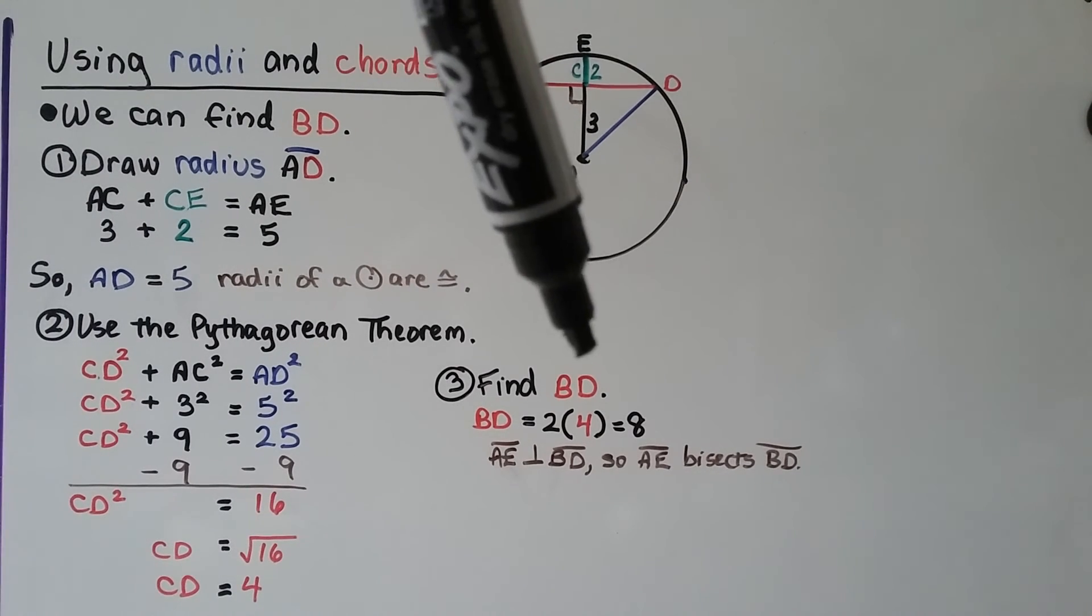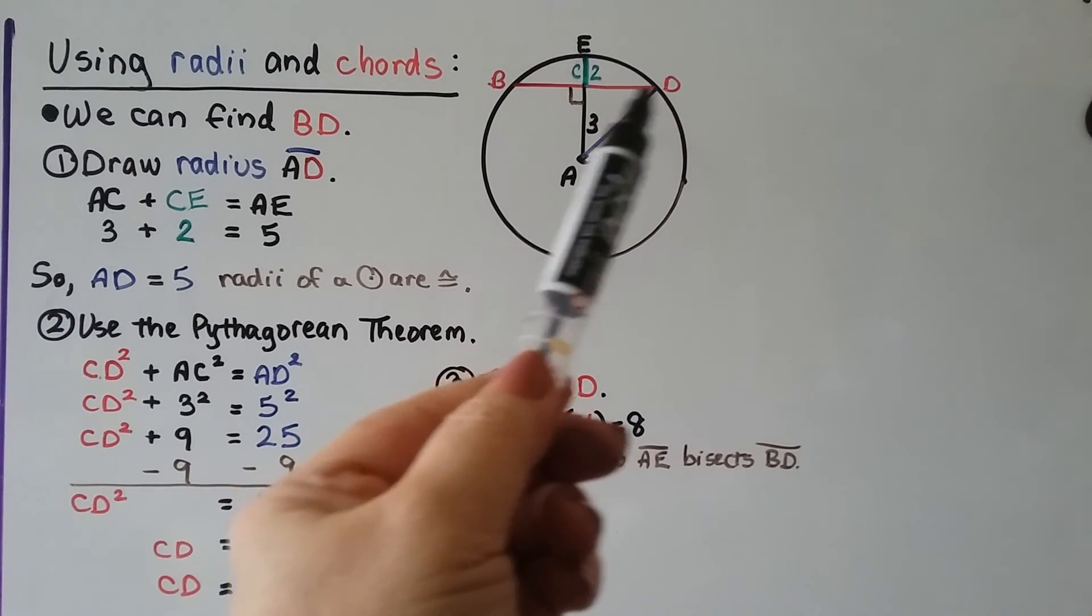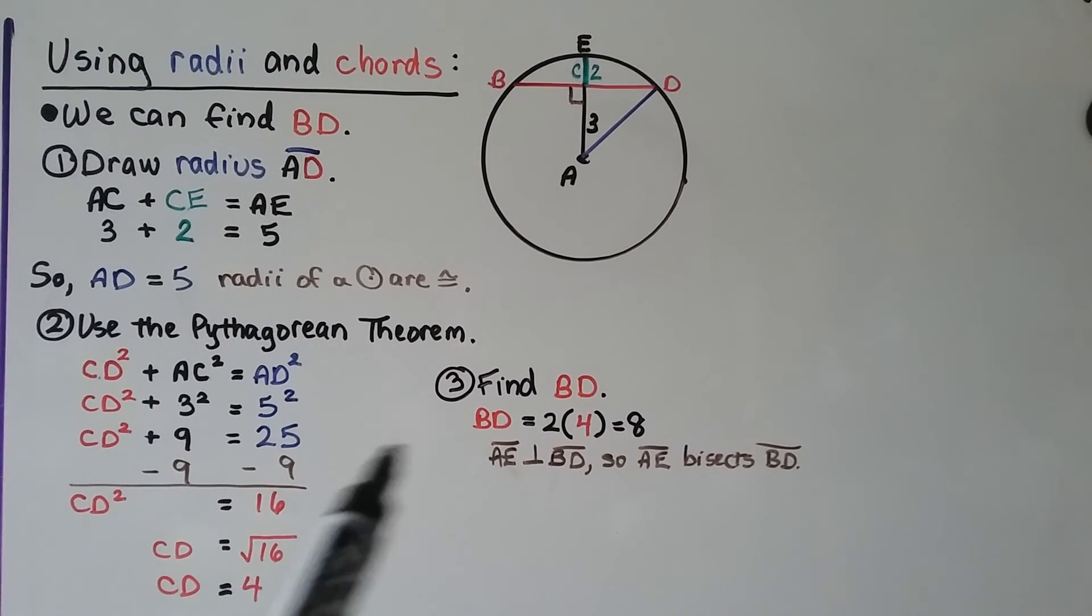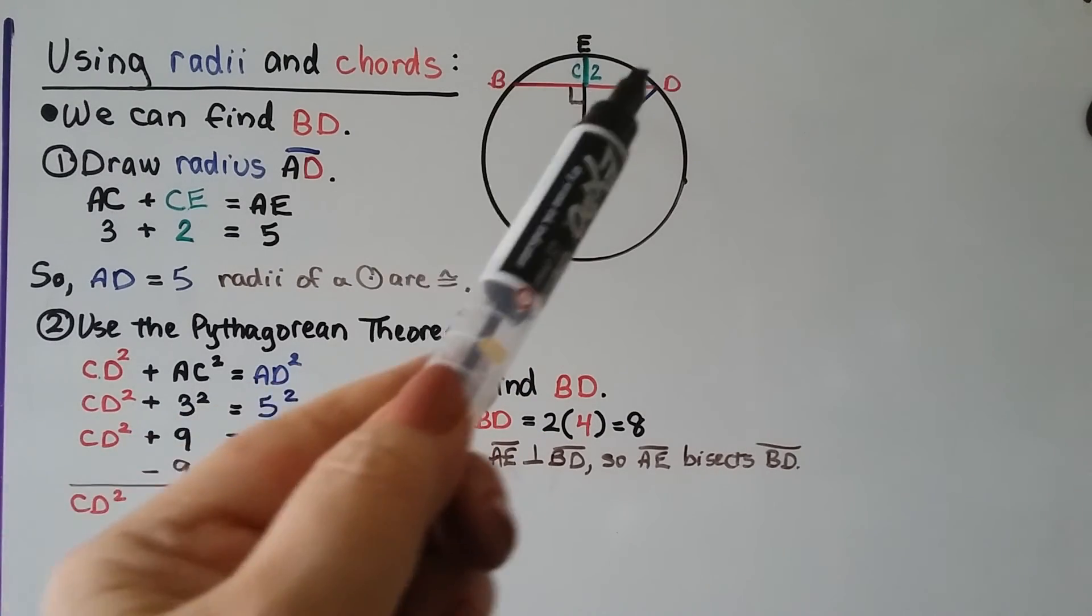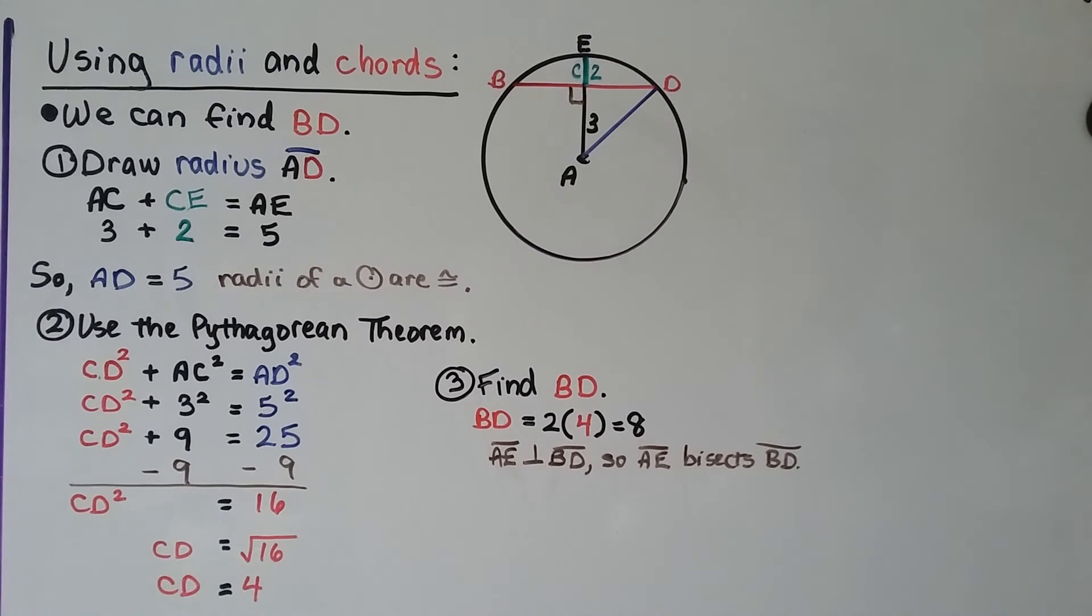The third thing we do is find BD. If we know from here to here is a 4, we do 2 times 4, because there's two of these that are congruent, right? It equals 8, so we know BD is equal to 8. We've got segment AE is perpendicular to BD, so AE bisects segment BD, that chord.